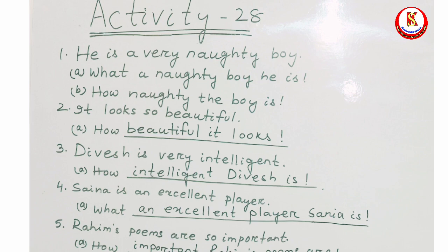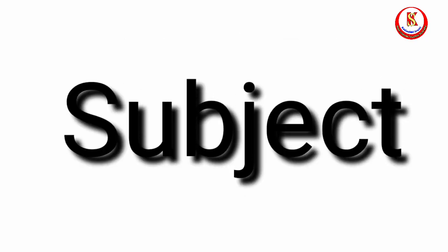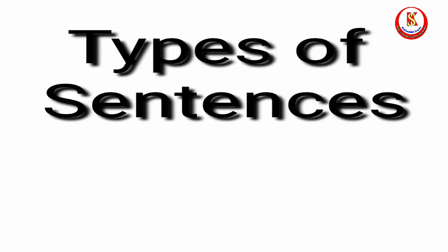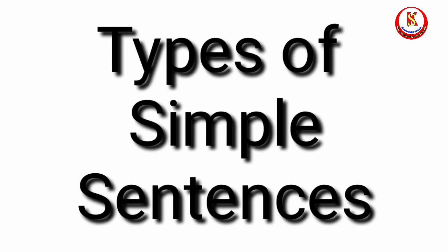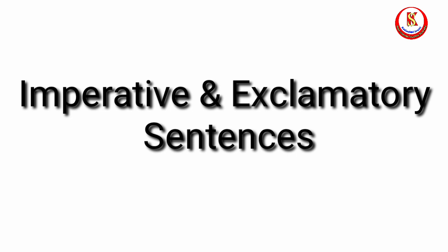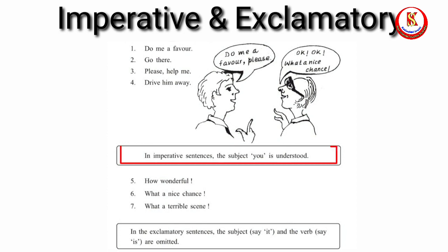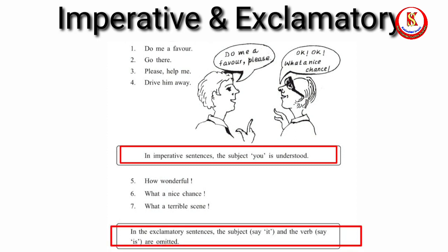We have now discussed what subject and predicate are, the different types of sentences, and the types of simple sentences. We divided declarative and interrogative sentences into subject and predicate. Imperative sentences have no explicit subject — it is understood as 'you'. In exclamatory sentences, the subject and verb are often omitted and simply understood.